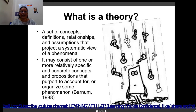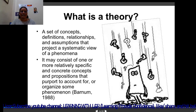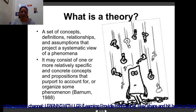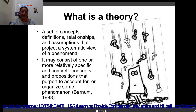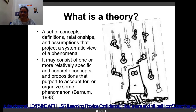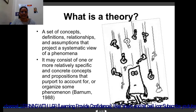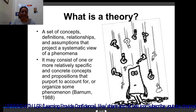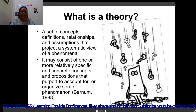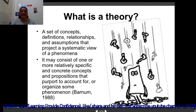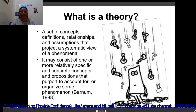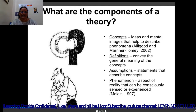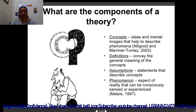Which idea we have, we define that idea and describe the relationship between that idea and other things, and assume something regarding the idea. A theory may consist of one or more relatively specific and concrete concepts — one or more ideas can be included in theory — and propositions that purport to account for or organize some phenomenon. With the help of different ideas or concepts, we can develop a new phenomenon; that is theory. What are the components of a theory?